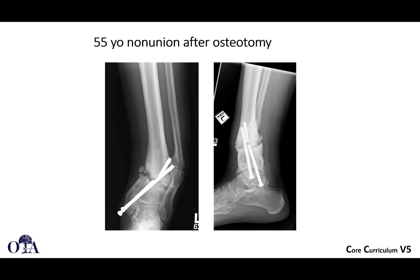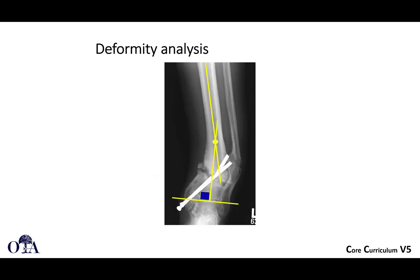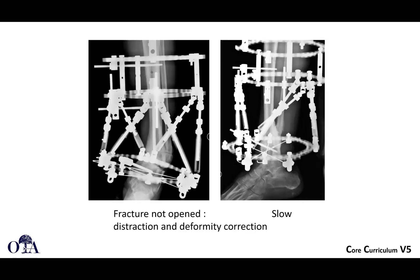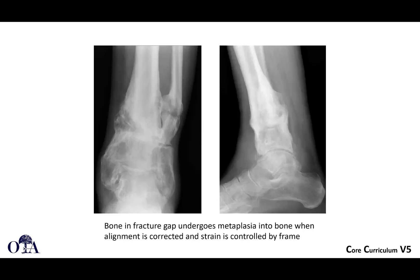Here's another case: a 55-year-old non-union after an osteotomy, with some broken hardware. You have to do deformity analysis, considering both planes and center of rotation angulation. In this case the fracture was not even opened — treated with distraction and deformity correction. By doing that, the tissue in the fracture gap undergoes metaplasia into bone, and with alignment corrected, the strain is controlled by the frame, and this goes on to heal.